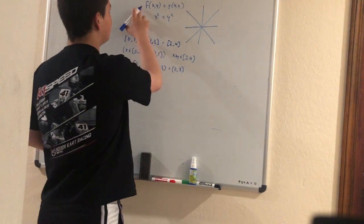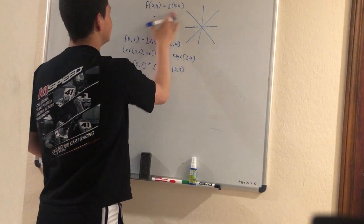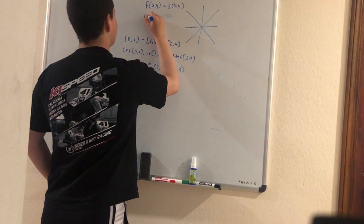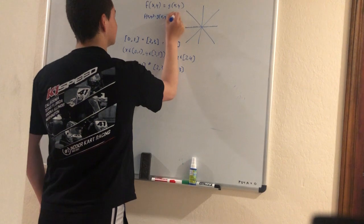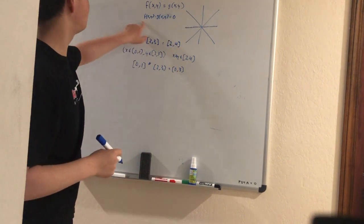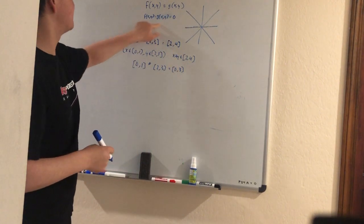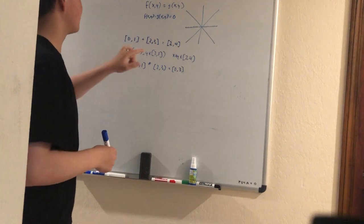So first of all, we take this equation and we rearrange it to be f(x, y) minus g(x, y) equals 0. So now we're going to find the roots, in a sense, of this equation here, this function.